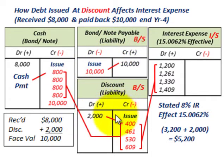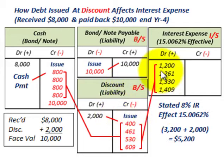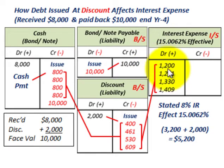For the interest expense entry: we had $800 cash payments each year. We credit cash for $800, and the discount amortized from the amortization schedule for year one was $400 — so we credit the discount account for $400. The balancing debit to interest expense is $1,200 for the first year. As you can see, our effective interest expense is at the 15.0062% effective rate, which is greater than the 8% cash interest expense. Based on the discount, our effective interest expense is greater and increases each year.